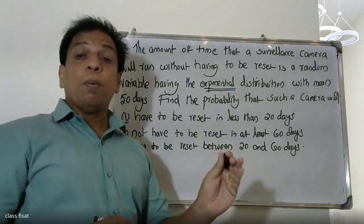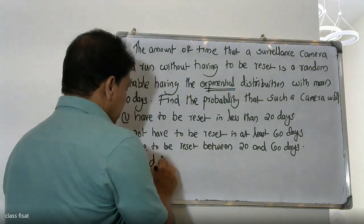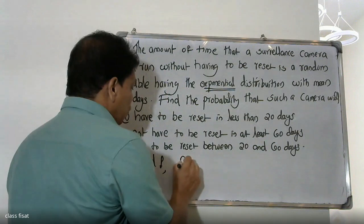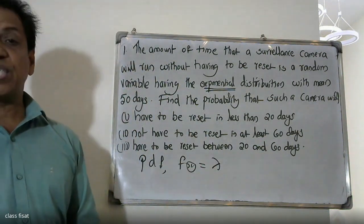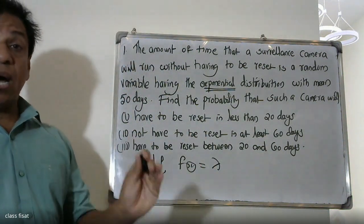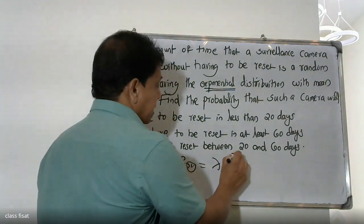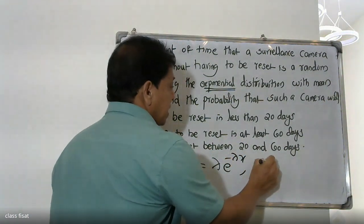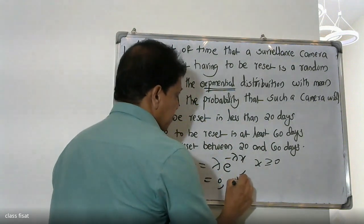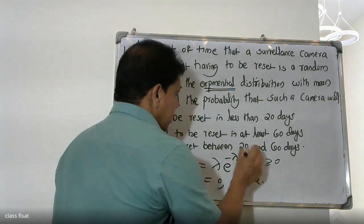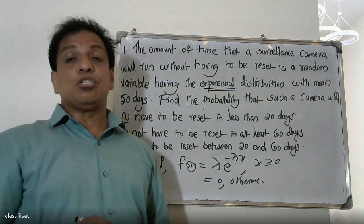First, we write the probability density function. The probability density function f(x) is equal to lambda times e raised to minus lambda x, where x is greater than or equal to 0, and 0 otherwise. This is the probability density function of the exponential distribution.